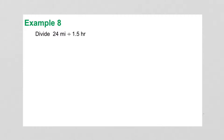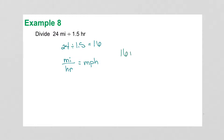Visualizing units: one dimension is a line, two dimensions give you a square (one inch times one inch), and three dimensions give you a cube (one inch times one inch times one inch). Example 8: divide 24 miles by 1.5 hours. 24 divided by 1.5 is 16, and miles divided by hours is miles per hour, so the solution is 16 miles per hour.